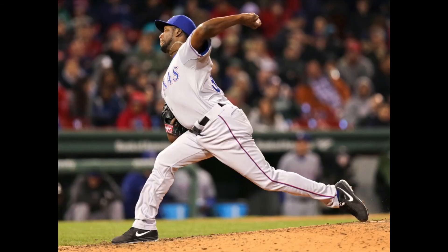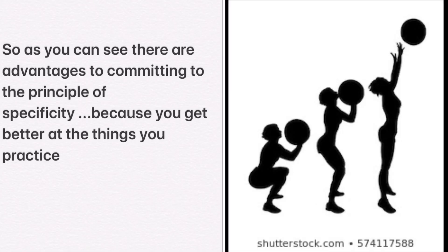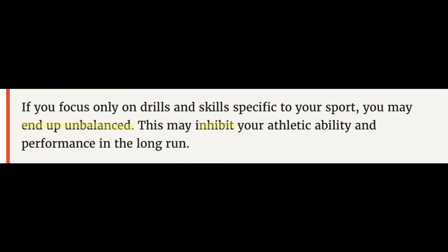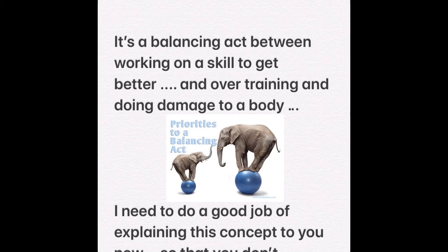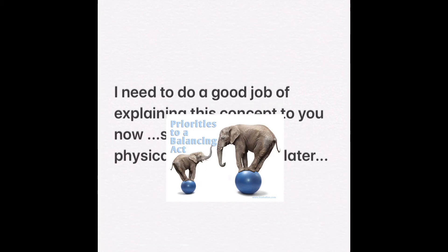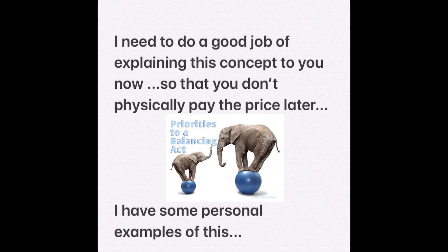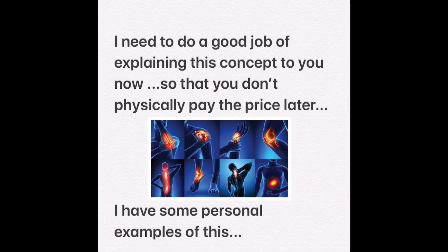For example, a young baseball pitcher throwing all the time gets very skilled at throwing and develops a lot of control, but over time does damage to his arm because of all the throwing motions. That's why pro baseball pitchers rotate — so that they have more longevity as baseball players. So there are advantages to committing to the principle of specificity because you get better at the things you practice, but there can also be consequences with overuse if the body is not allowed to recover properly. This is very similar to the rest concepts covered in the last lesson. It's a balancing act between working on a skill to get better and overtraining and doing damage to your body.